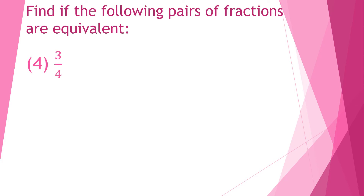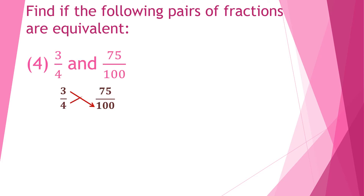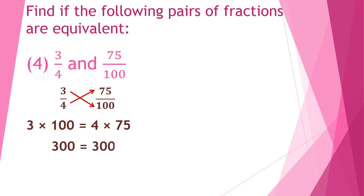Question number 4: 3 upon 4 and 75 upon 100. Do the cross multiplication — that means 3 multiplied by 100 is equal to 4 multiplied by 75. Everyone knows how to do multiplication. Pause the video and do the multiplication on your own and check. 3 multiplied by 100 is equal to 300 and 4 multiplied by 75 is equal to 300.